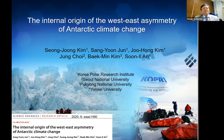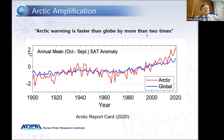This result was published in Science Advances last year. This work is based on our colleagues at my institute, Korea Polar Research Institute, and some other colleagues in Korea. As you all know, Arctic warming is very fast compared to the rest of the world, called Arctic amplification. The blue color is global and the red color is Arctic mean overland surface temperature — it's about two or three times faster than the rest, called Arctic amplification.